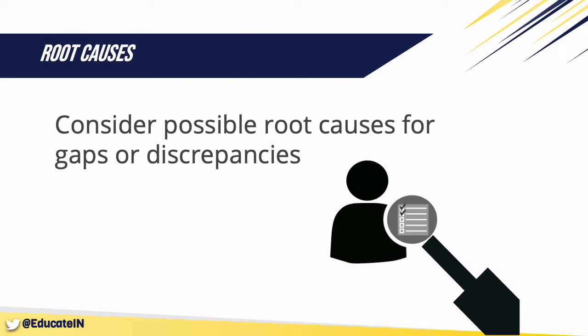Supplemental data helps you dig a little deeper and consider possible root causes for any gaps or discrepancies in student achievement, attendance, or discipline. For instance, you'd want to find out more about a certain class or grade level that has a higher number of absences and why it's happening. Perhaps results from a needs assessment survey showed that students are reporting more incidents of bullying or higher levels of stress, or do not feel safe at school, which could be contributing to the issues with attendance. These needs assessment survey results are an example of supplemental data — data that will help you target and prioritize goals for your program and begin to think about strategies for reaching your goals.